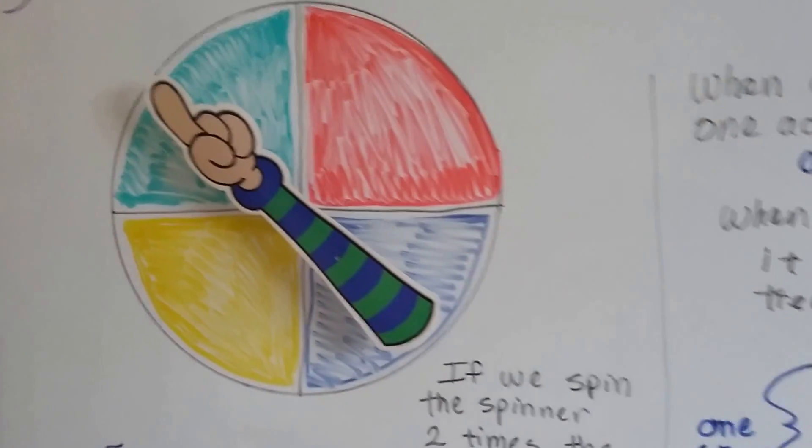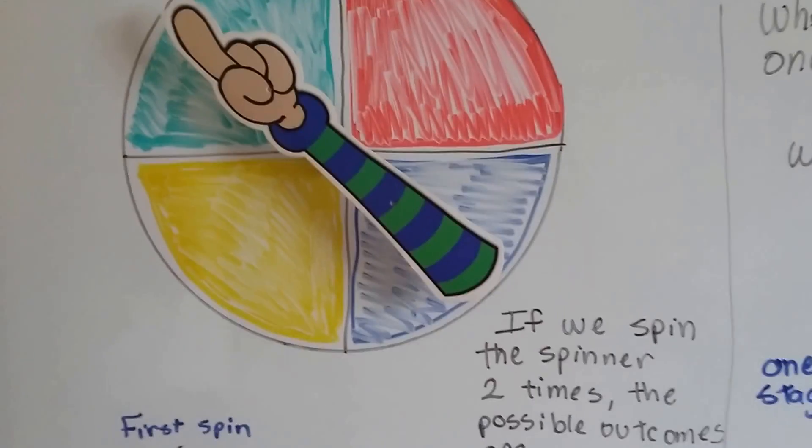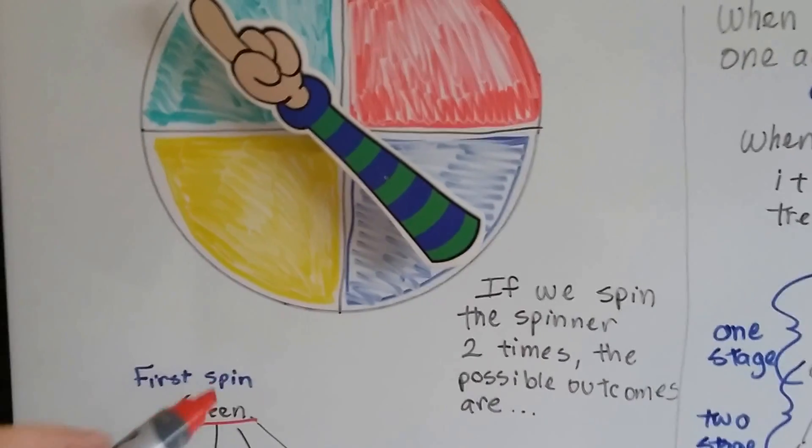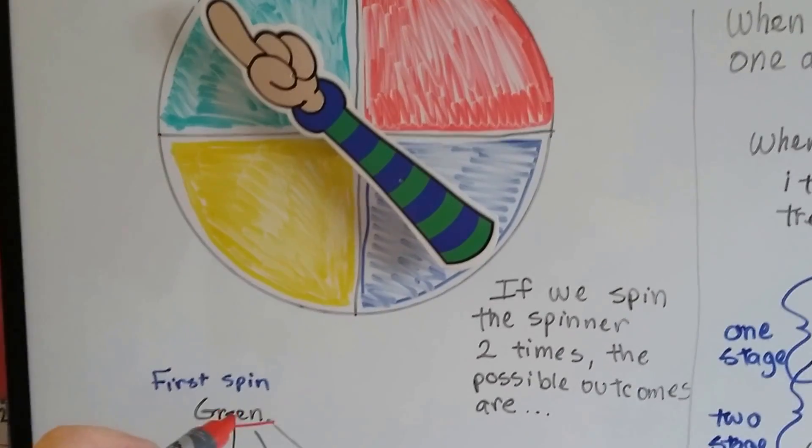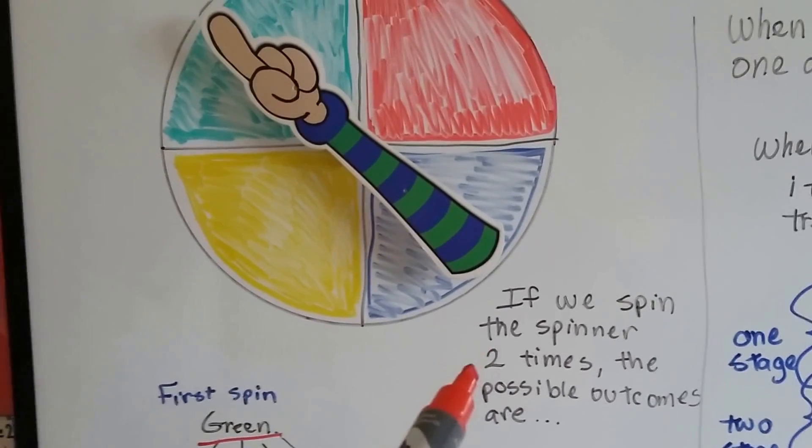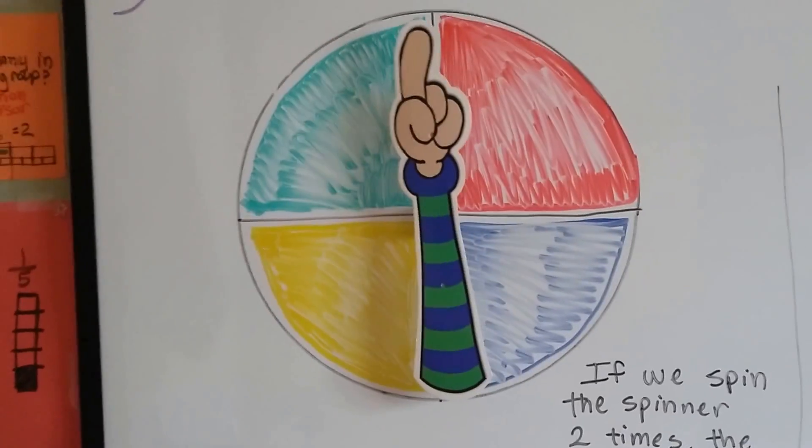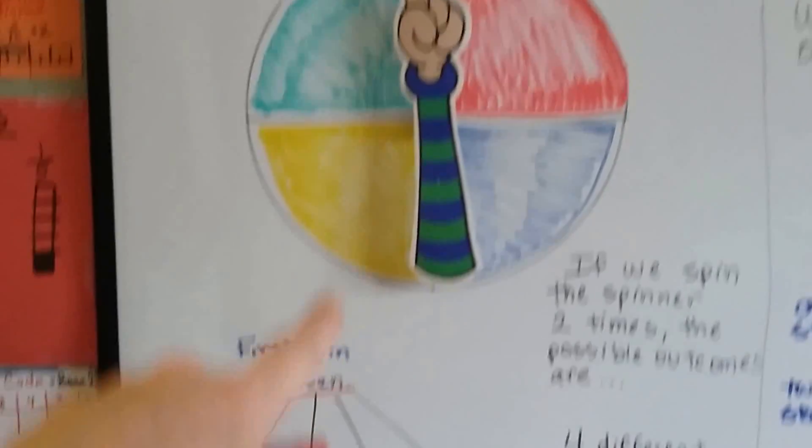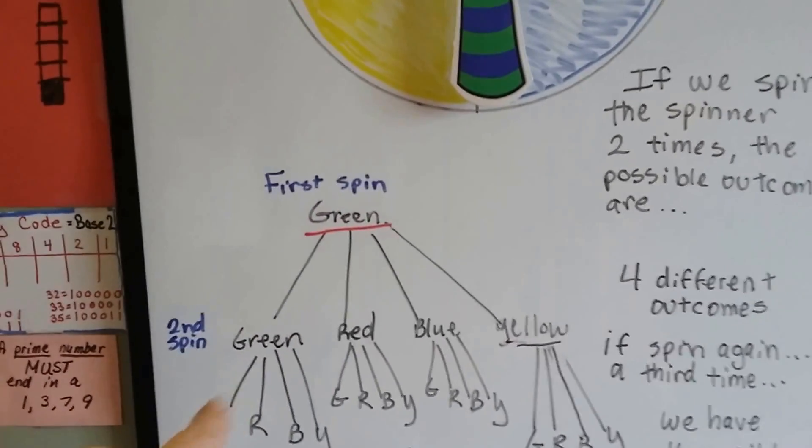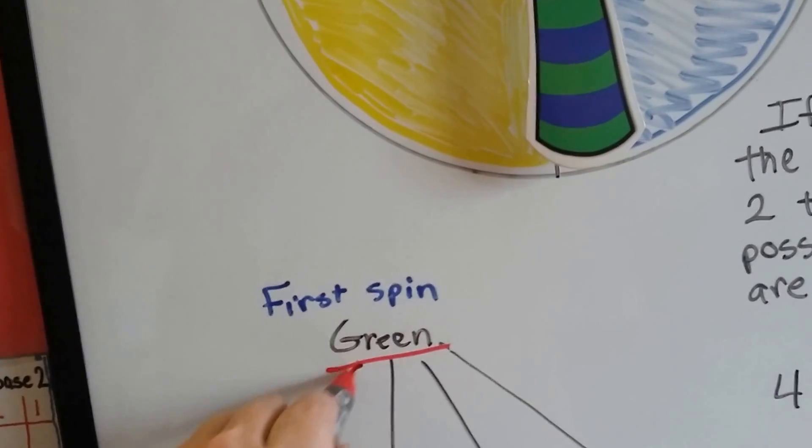I've got my little spinner here with my hand, and I spun it one time. And the first time I spun it, it landed on green. Now, if I spin it two times, what do you think the next color will be? Oh, it landed on green again. So it went from green to green, so we went down this path.